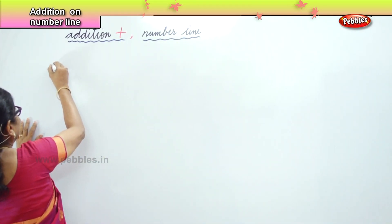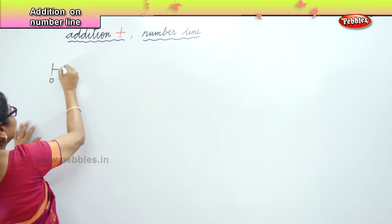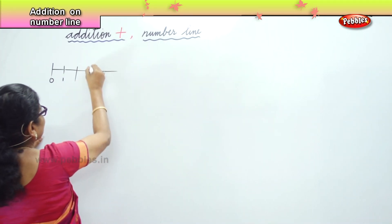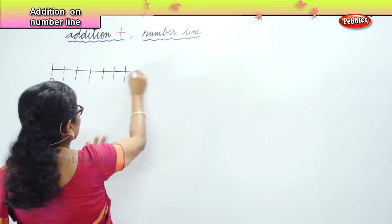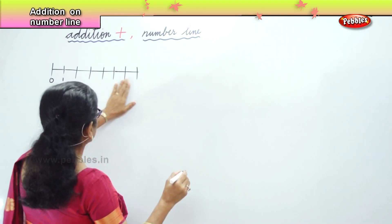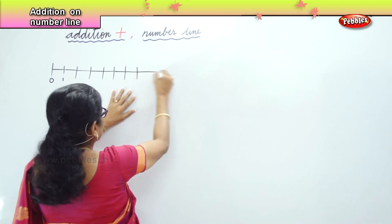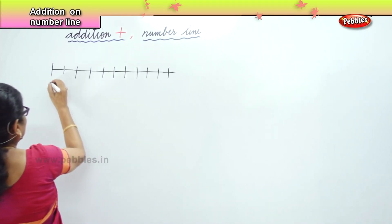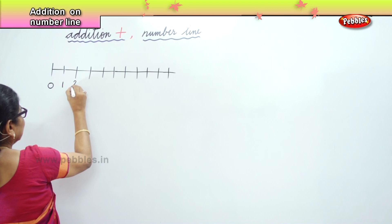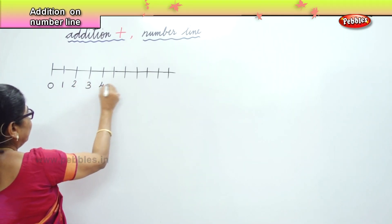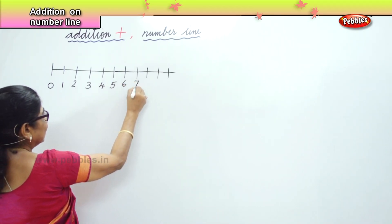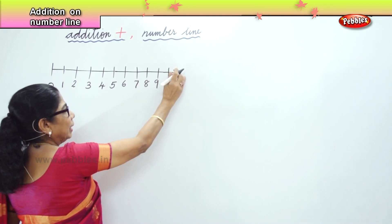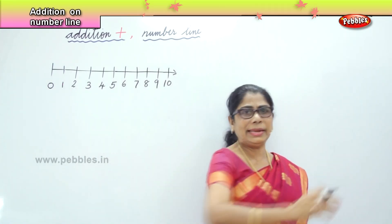Here we are. I'm going to do the number line and we are going to begin with zero. Zero, one, two, three, four, five, six, seven, eight, nine, and ten. And this number line can go on and on — you can extend to any number.